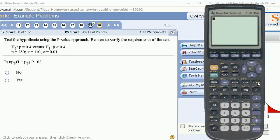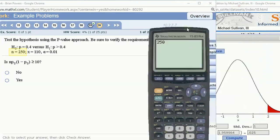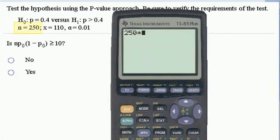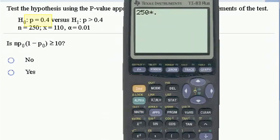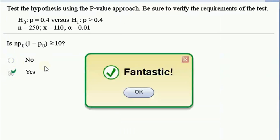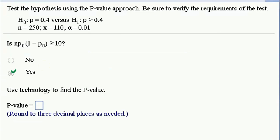So the first check is whether our sample size is big enough. Is the sample size, that's 250, I'll put this here, is the sample size times the proportion from the null hypothesis, 0.4 times 1 minus 0.4, is that greater than or equal to 10? Yes, indeed it is. That's a good check.